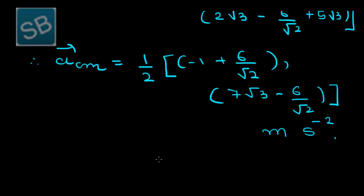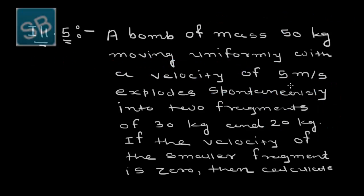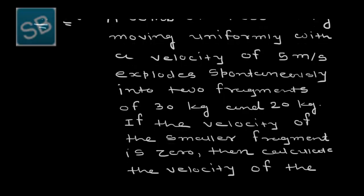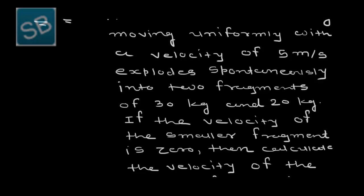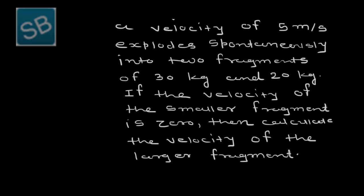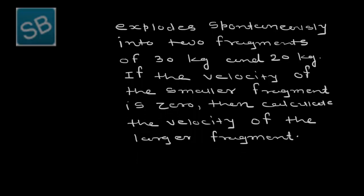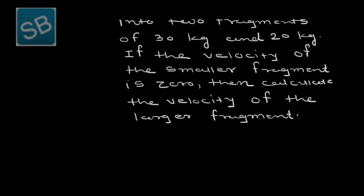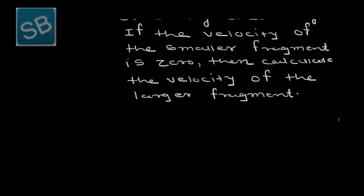We now move to article 1.4 on the law of conservation of linear momentum with Illustration 5. A bomb of mass 50 kg moving uniformly at 5 m/s explodes spontaneously into two fragments: one fragment of mass 30 kg and another of mass 20 kg. If the velocity of the smaller fragment is 0, we have to calculate the velocity of the larger fragment.